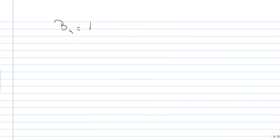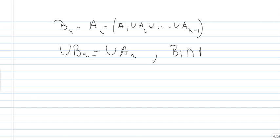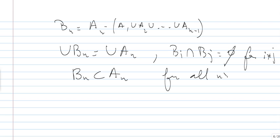And how do I get my B_n? So B_n will be A_n minus A1 union A2 union A_{n-1}. So, I will leave it to check that, in fact, we have what we said, meaning that the union of the B_n's is equal to the unions of the A_n's, B_i intersected B_j is empty for i different from j, and B_n is a subset of A_n for all n.